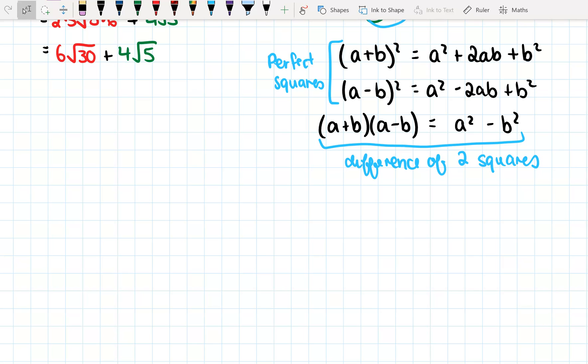Okay, so for example, let's do (4√3 + 7)². Okay, so remember, our first term is a², so that means we have (4√3)² plus 2 times a times b. So 2 times 4√3 times 7. Okay, plus b², so 7².